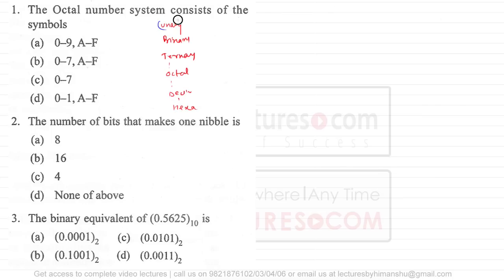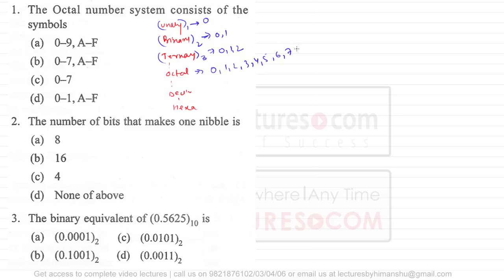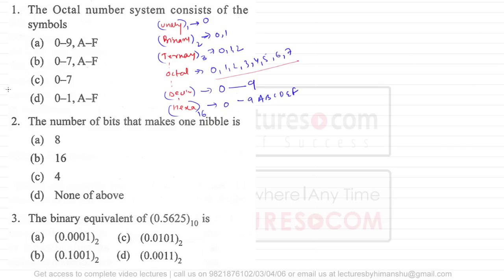In the unary number system the base is 1, so we have only one symbol. In binary we have two symbols: 0 and 1. In ternary we have three symbols: 0, 1, and 2. In octal we have 8 symbols: 0 through 7. In decimal we have 10 symbols: 0 to 9. In hexadecimal we have 16 symbols: 0–9 and then A, B, C, D, E, F. So the correct answer for the octal number system question is option C.